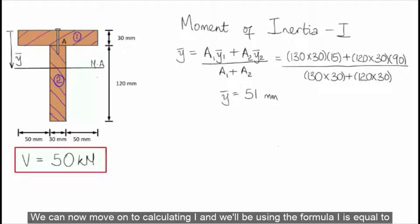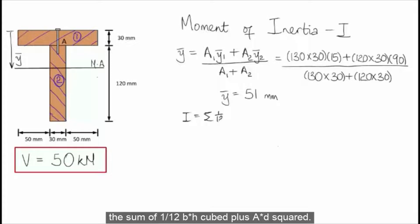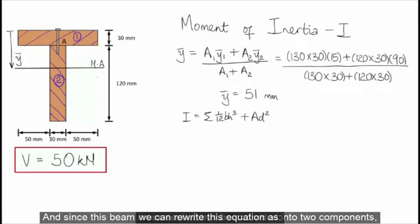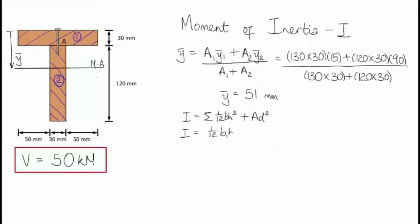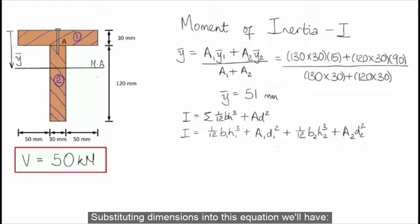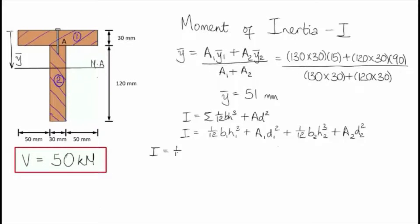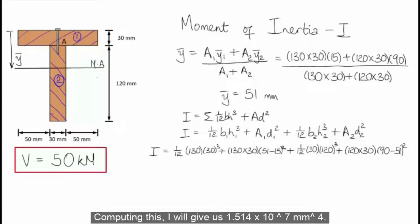We can now move on to calculating I, and we will be using the formula I is equal to the sum of (1/12)BH³ plus AD². Since this beam cross-section has been divided into two components, we can rewrite this equation and substitute the dimensions. Computing this, I will give us 1.514 times 10 to the power of 7 millimeters to the fourth power.